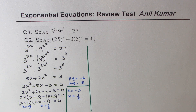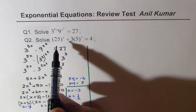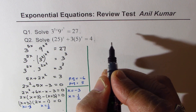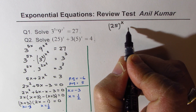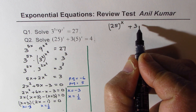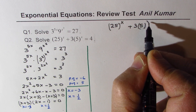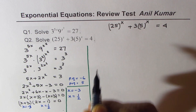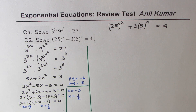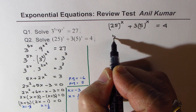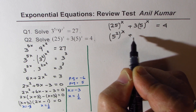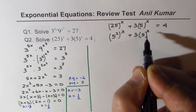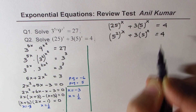Now let's look at question number 2. We are given 25 to the power of x plus 3 times 5 to the power of x equals 4. Since 25 is 5 squared, we can write this as 5 squared to the power of x, plus 3 times 5 to the power of x equals 4.